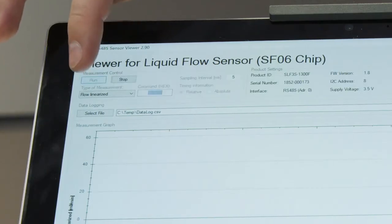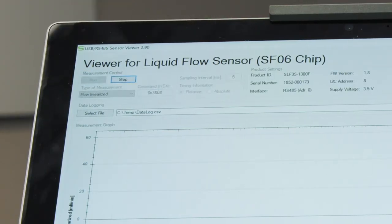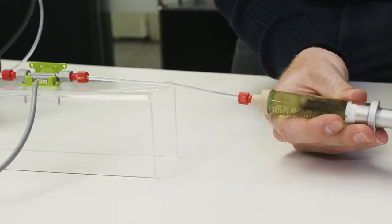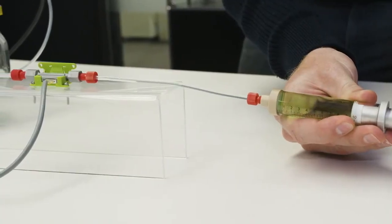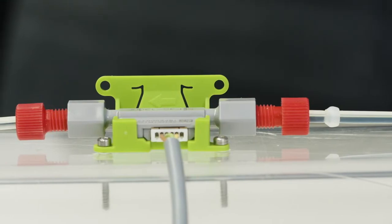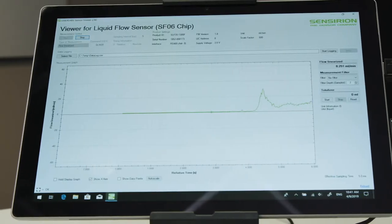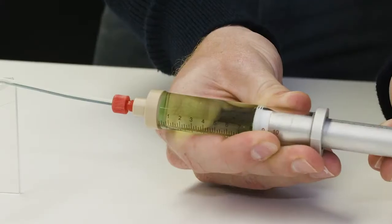Start the measurement with the run button and if needed lock the data. As the measurement is started and the flow is applied to the syringe, the fast response of the sensor can be quickly seen. The graph shows the real-time flow rate measurement.